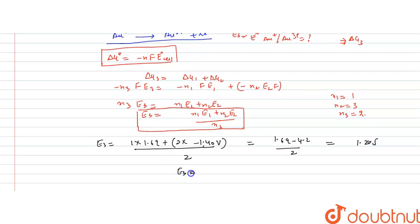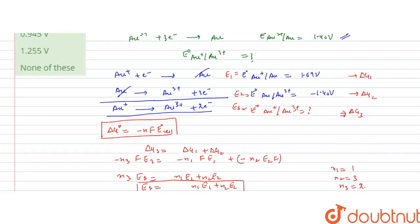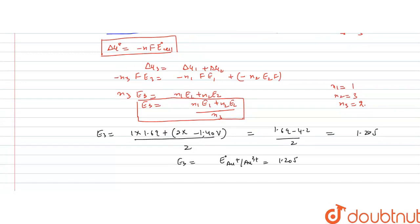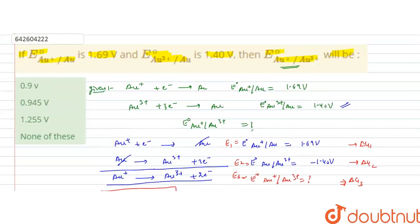So E3, that is the electrode potential for AU+ to AU3+, the oxidation potential for AU+ to AU3+, is minus 1.255 volt.